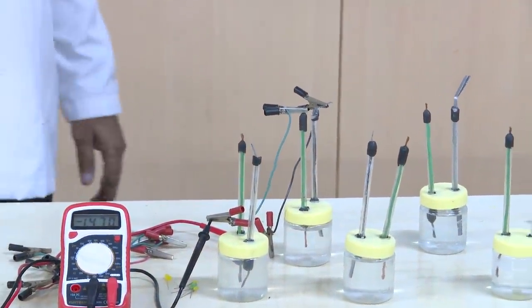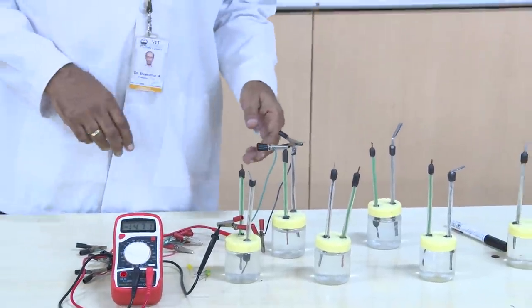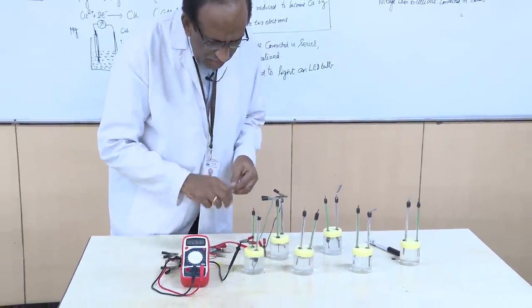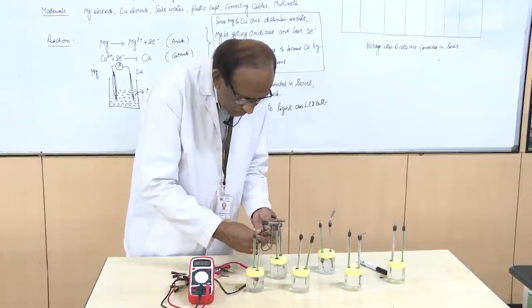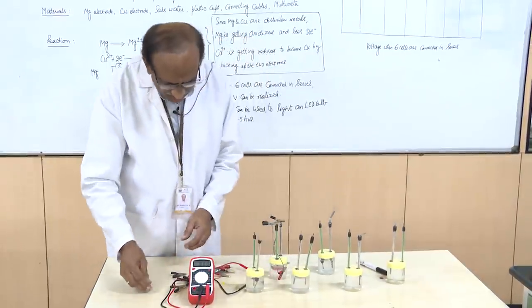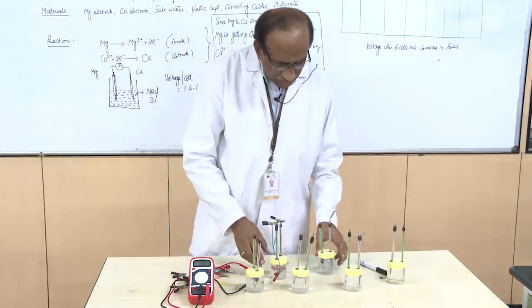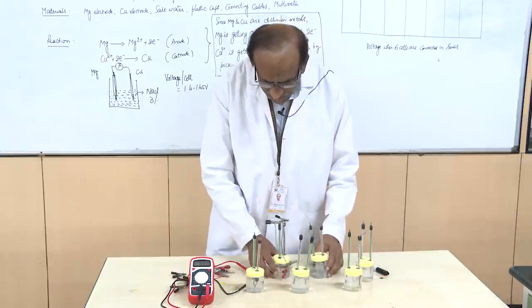Now what we will do in the next step is we will try to light a small LED bulb with all the 6 cells connected in series. I will tell you how we are going to do that. Now we have 6 cells here.